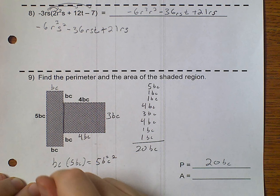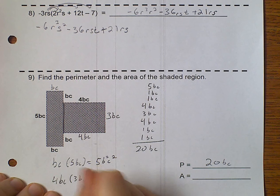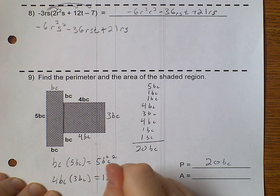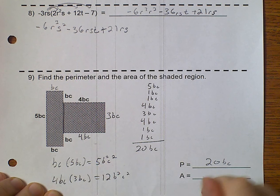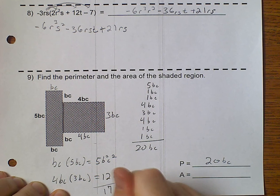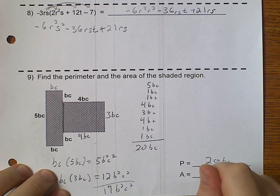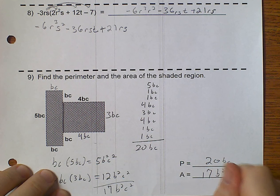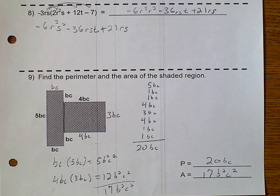And, this one would be 4 bc, times 3 bc, gives me 12 b squared, c squared. And, when I add those two together, I get 17 b squared, c squared. And, so that's the area of this, because we had to find the area of both rectangles and add those together.